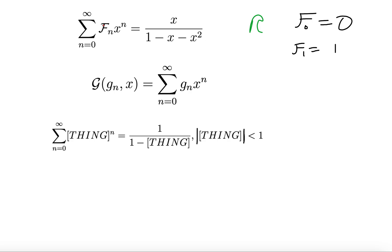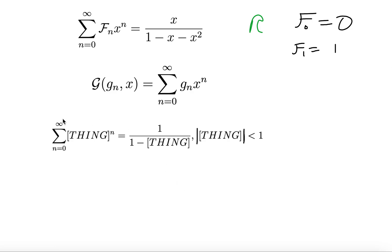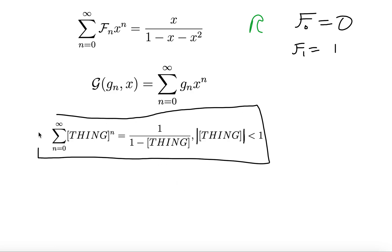It's important to remind ourselves that generating functions are functions, and f(x) does not just have to take a number input — we can compose functions, we can get f(g(x)). Think of x as a thing; it's anything you want it to be. So it's helpful to look at the sum from n equals 0 to infinity of (thing)^n as equal to 1 over 1 minus thing, as long as the absolute value of your thing is less than 1. This is our geometric series from the first episode.